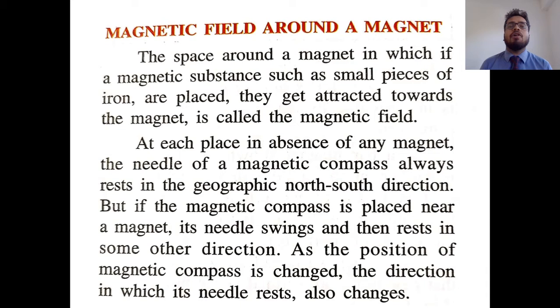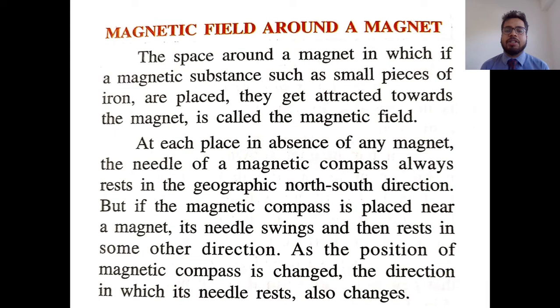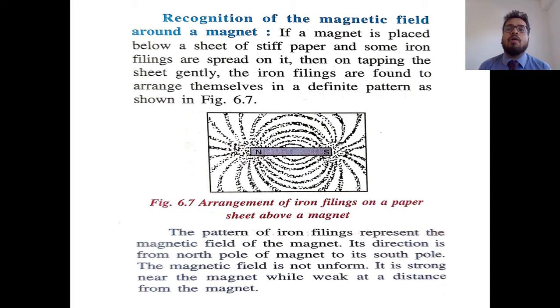At each place, in the absence of any magnet, the needle of a magnetic compass always rests in the geographic north-south direction. But if a magnetic compass is placed near another magnet, the needle will swing and rest in some other direction. As the position of the compass is changed, the direction in which the needle rests also changes. Generally, because of the earth's magnetic field, it rests in the north-south direction, but if another magnet is brought nearby, it may rest in some other direction.